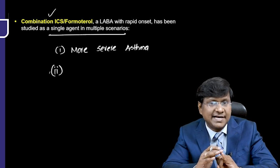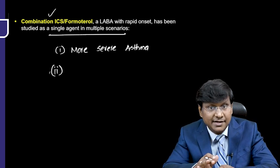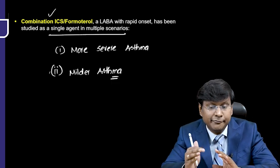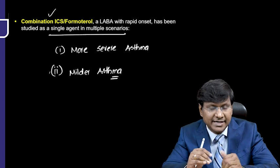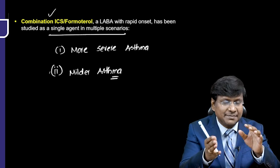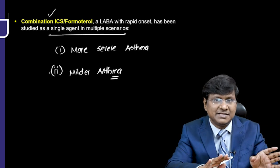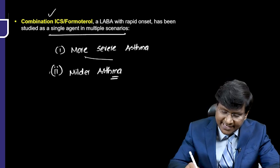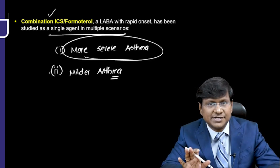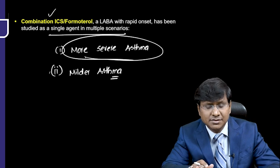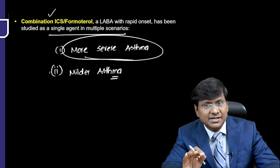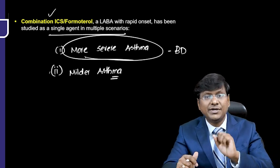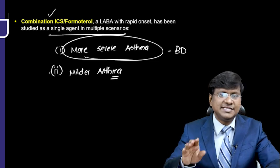This combination is also studied in patients with milder asthma without background therapy — meaning no prior treatment but presenting with acute exacerbation. The ICS plus formoterol combination can be given in these cases, and is especially advised in more severe asthma. It can be given twice daily.